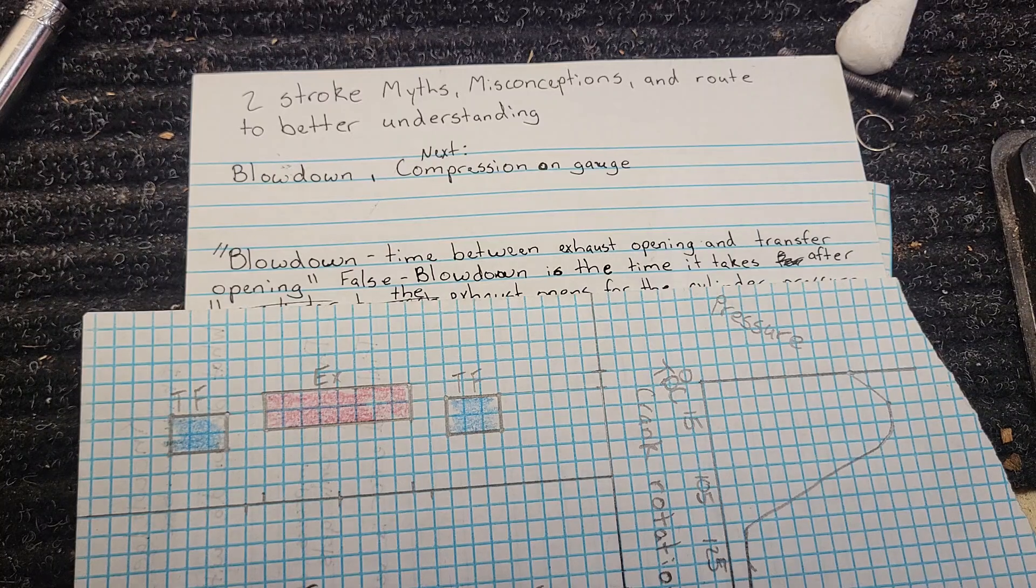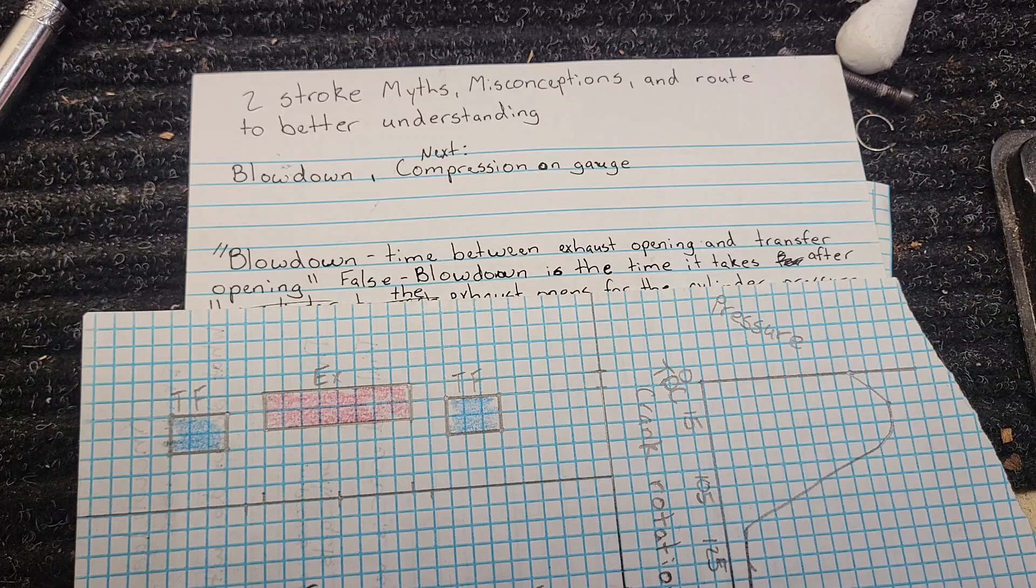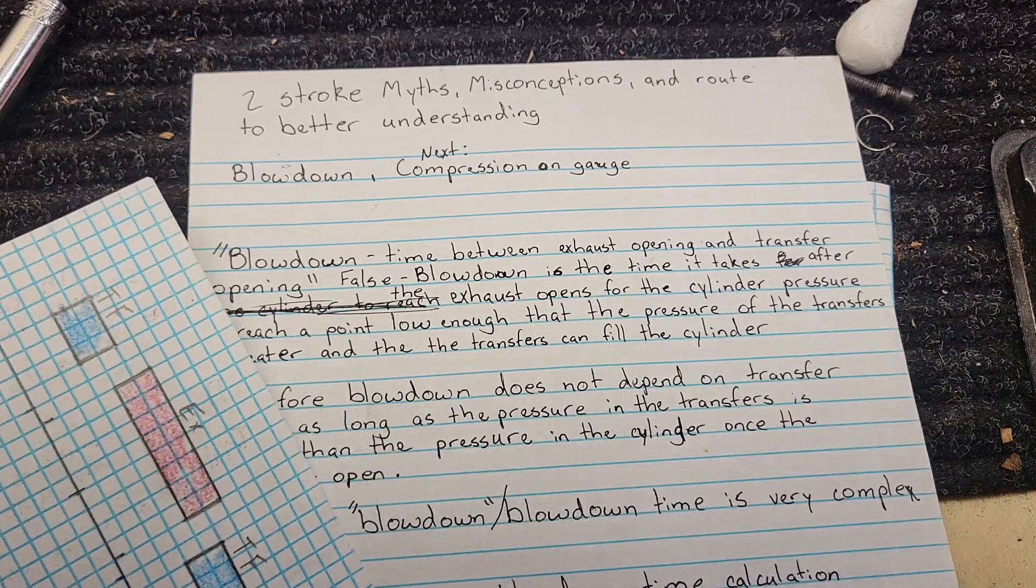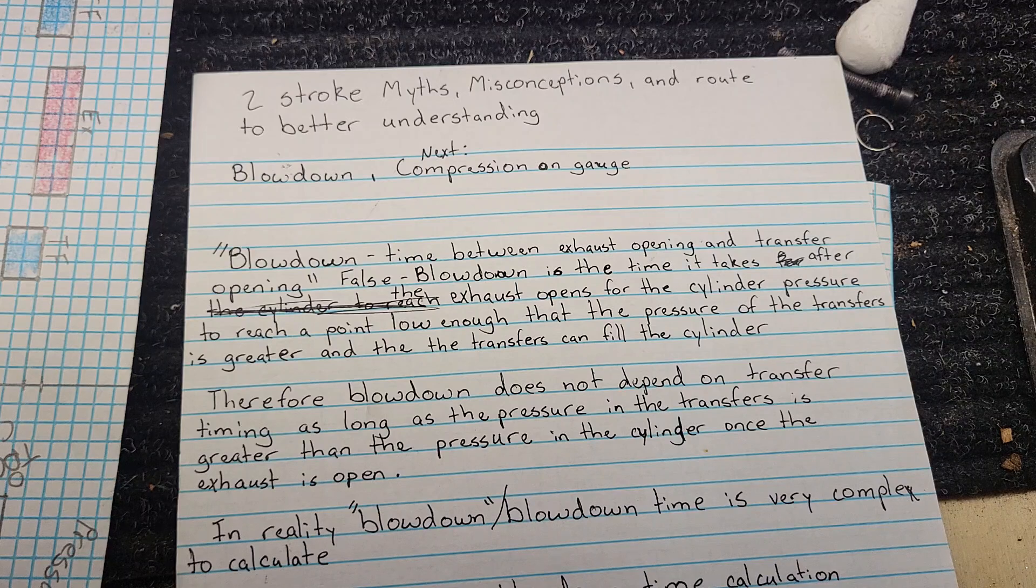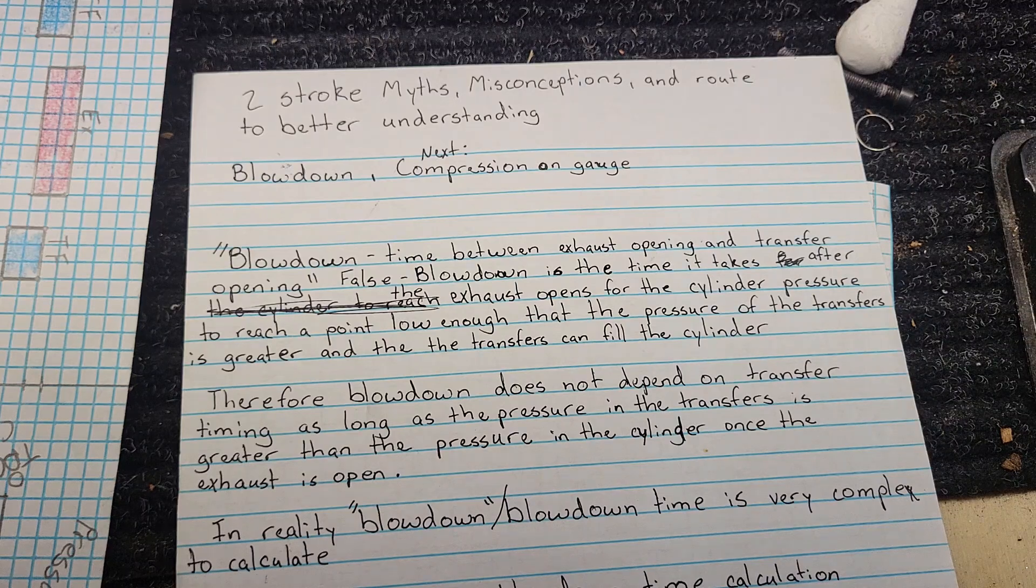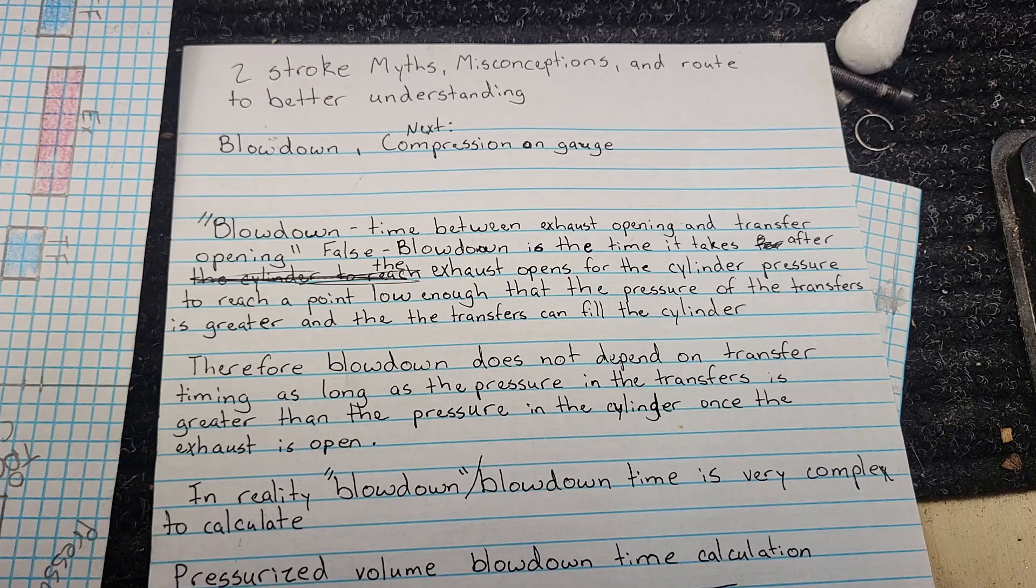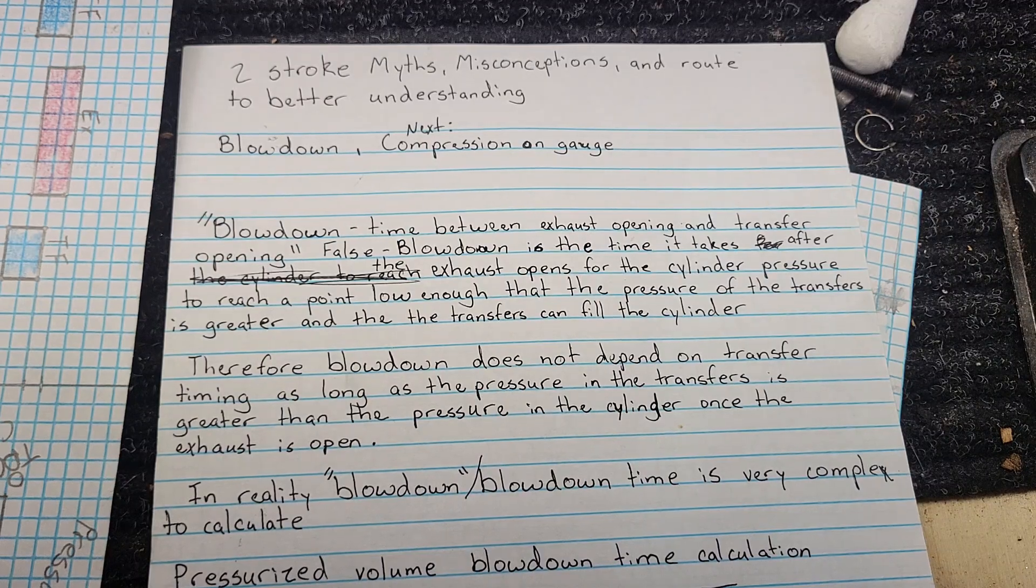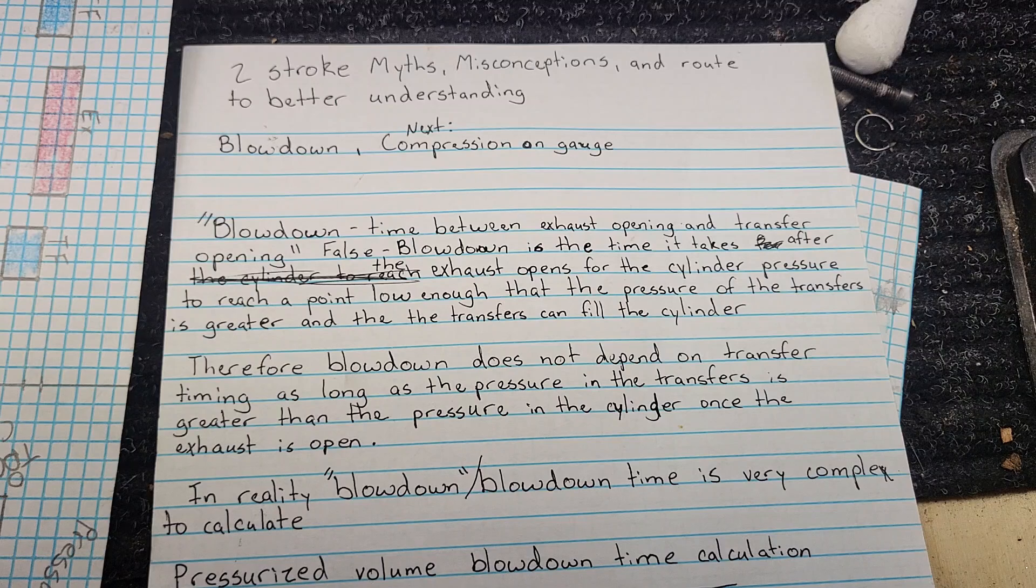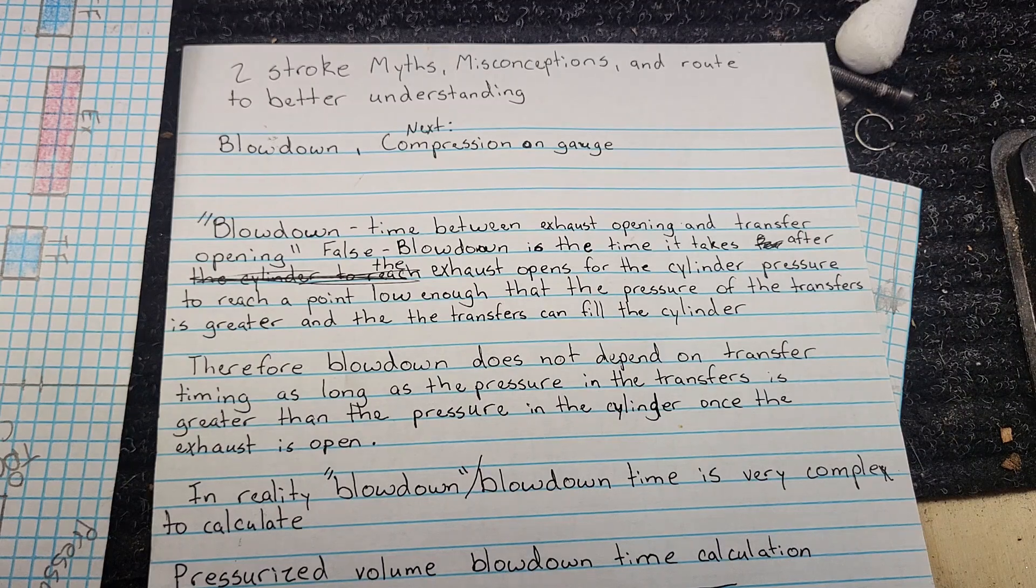In reality, that is false. Blowdown in a two-stroke is the time it takes after the exhaust opens in the cylinder for the pressure in the cylinder to drop to a point low enough that the pressure of the transfers is greater than what is currently in the cylinder, and that allows transfers to fill the cylinder.